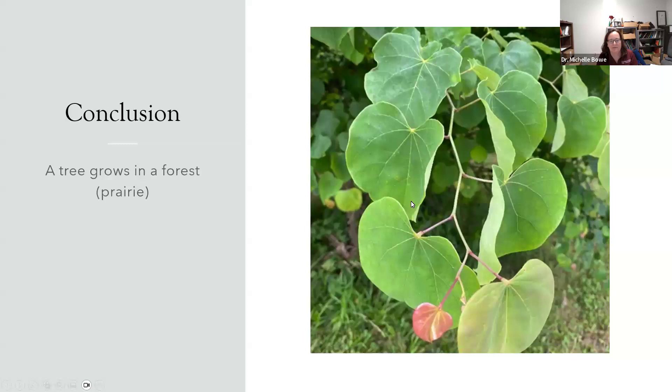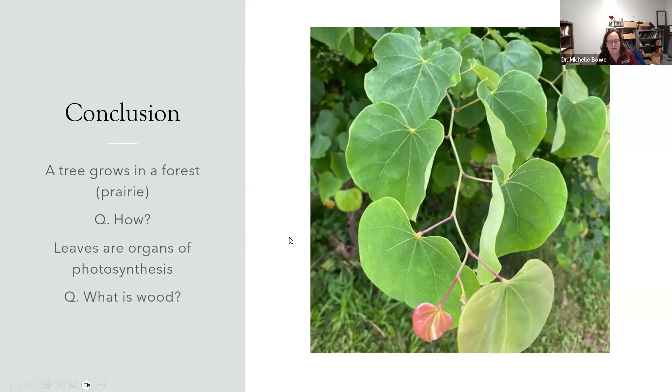So, kind of in conclusion, I wanted to go back to our tree that's growing in the forest or prairie and remind you that leaves are ultimately the very important part of the plant. They are the organs of photosynthesis. So, next time you're outside and you see a leaf, think about it being an organ. And then wood, ultimately, is simply carbon dioxide and water. We want to think of it as something more complicated than that. It's polymerized carbon dioxide and water. All of this biomass, it gives us fossil fuels, you can burn it, make paper out of it. We use wood for all kinds of things. So, it all boils back down to water and carbon dioxide in the leaves.